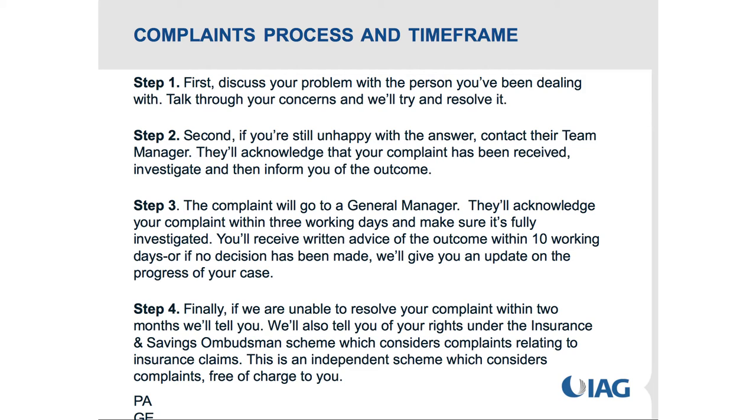Step four: if we're unable to resolve your complaint within two months it's deadlocked and it can go to the Insurance and Savings Ombudsman. The Ombudsman can only rule on whether we have done what we're obligated to do under the policy - so it's quite a black and white approach, very much about the policy. If your claim isn't moving and you need help keeping it moving, you're probably better to address that through a direct conversation with the right person rather than going through the official process.